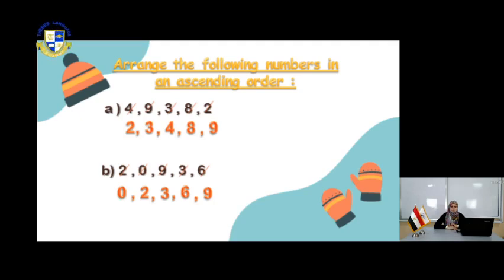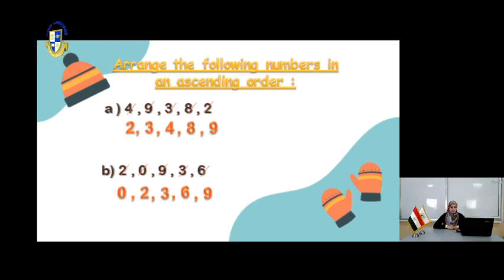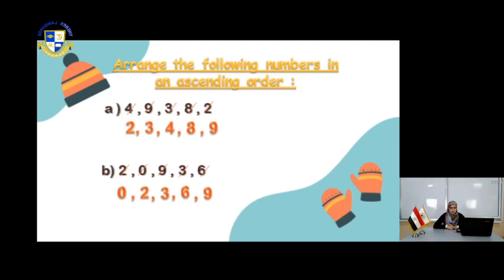Number B: you have 2, 0, 9, 3, and 6. Where is the ant number? Where is the smallest number? Yes, it's 0. So: 0, 2, 3, 6, and 9. Remember, ascending means ant, descending means dinosaur — you search for the D, for the dinosaur.